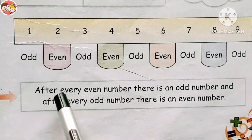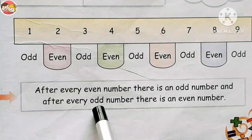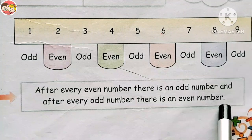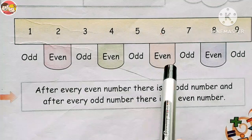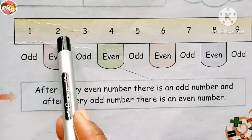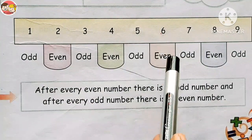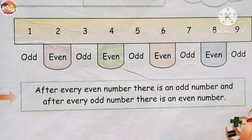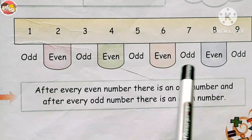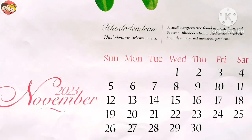One more key point: after every even number there is an odd number, and after every odd number there is an even number. Odd, even, odd, even, odd, even — and so on. Number one is odd, two is even, three is odd, four is even, five is odd, six is even, seven is odd, eight is even, nine is odd, and ten is even, and so on. So odd and even numbers come one after the other.